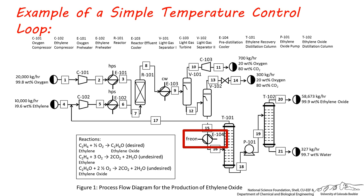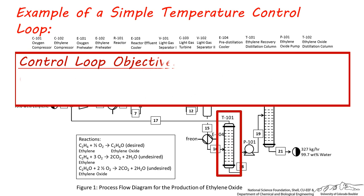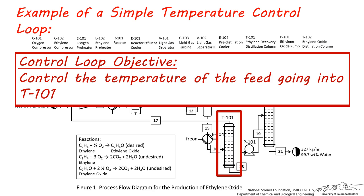We'll see how we can set up E-104 so it can be controlled to deliver a specific inlet temperature for the column T-101. So the purpose of this feedback loop is to control the feed temperature going to T-101 to help the distillation column achieve consistent separation.